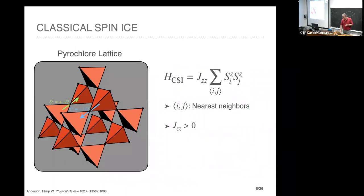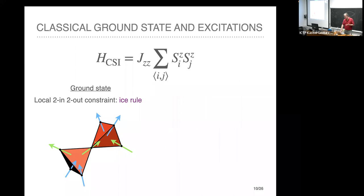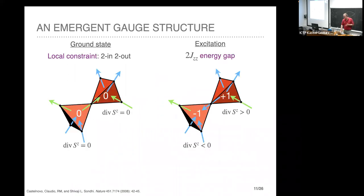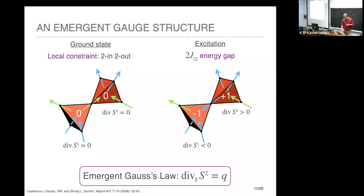Let me walk you through this. Starting with classical spin ice, forgetting about quantum dynamics, just to explain the degeneracy: classical spin ice has Ising spins living on the sites of the pyrochlore lattice with effectively antiferromagnetic exchange. The ground states are those where each tetrahedron has two spins pointing in and two spins pointing out. There's an excitation gap — you can flip a spin but that costs finite energy equal to the Ising exchange.